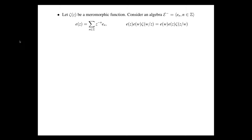For now I keep zeta a meromorphic function, and I will explain how you get shuffle algebras from that. We start with this algebra. Next, I would like to make a very simple transform: I will replace E_n by a function in one variable x1 to the n, using this formula. This is just taking an integral together with the current E. Let's consider a product of two such elements.